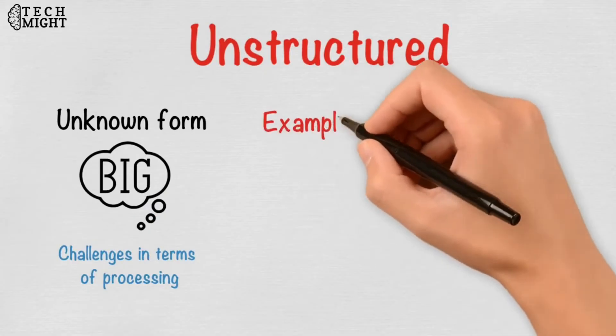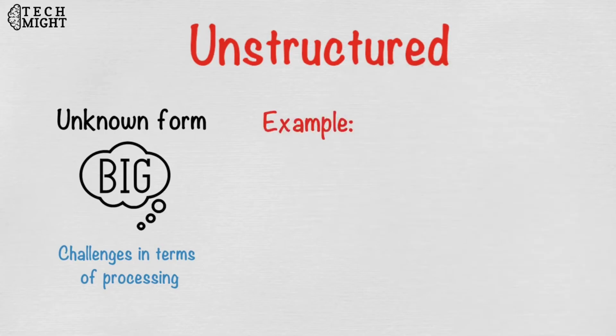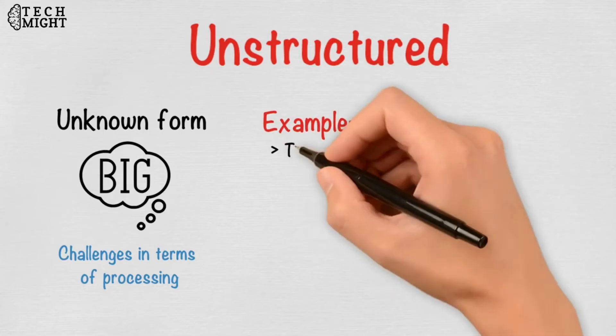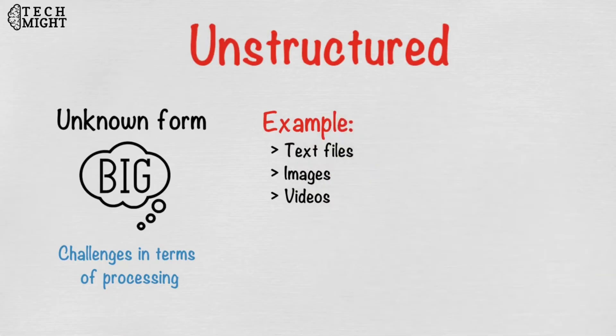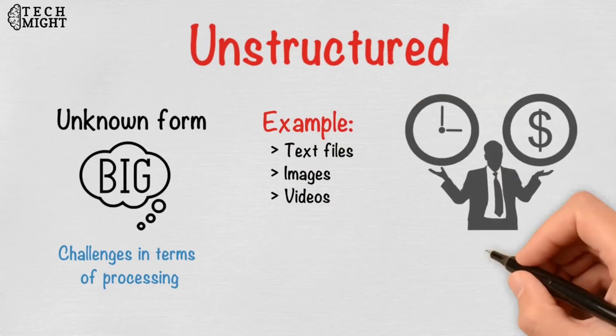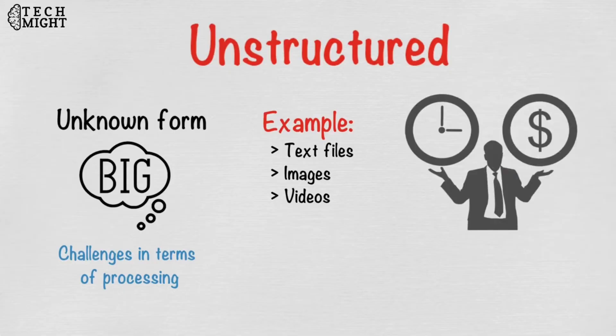A typical example of unstructured data is a heterogeneous data source containing a combination of simple text files, images, videos etc. Nowadays, organizations have wealth of data available with them but unfortunately, they don't know how to derive value out of it since this data is in its raw form or unstructured format.